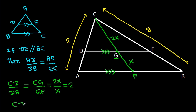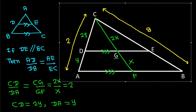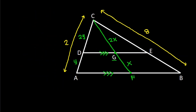That means if CD is 2y, then DA will be y. So CD is 2y and DA is y. We also have that DE is parallel to AB.